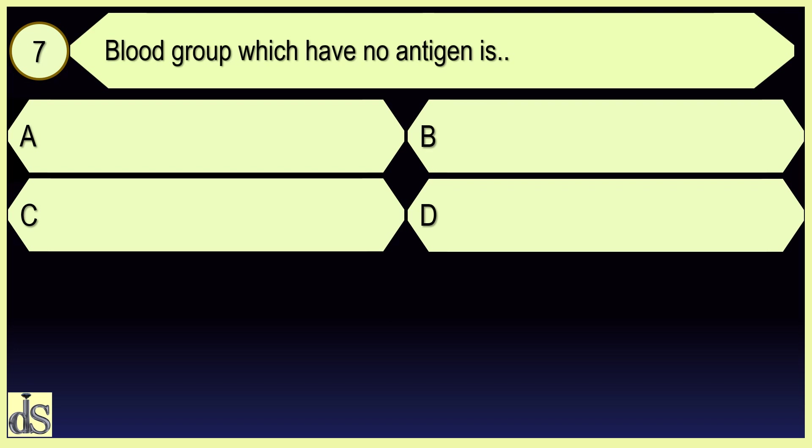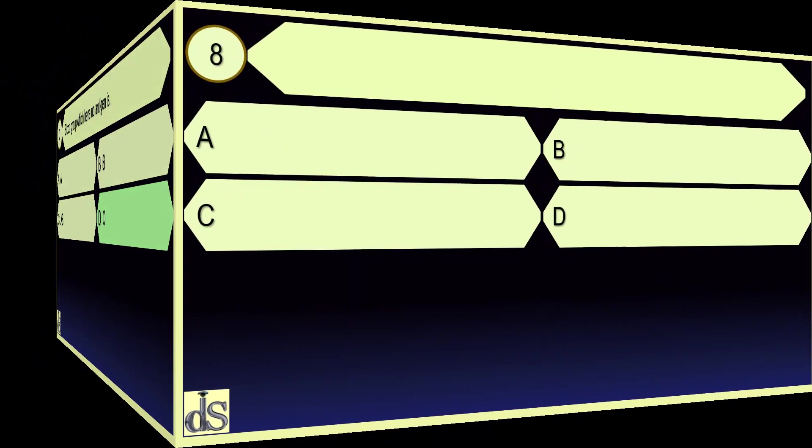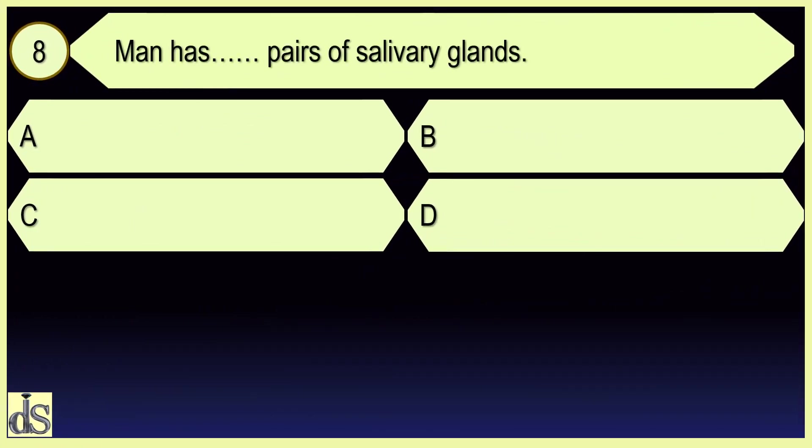Blood group which have no antigen is O. Man has three pairs of salivary glands.